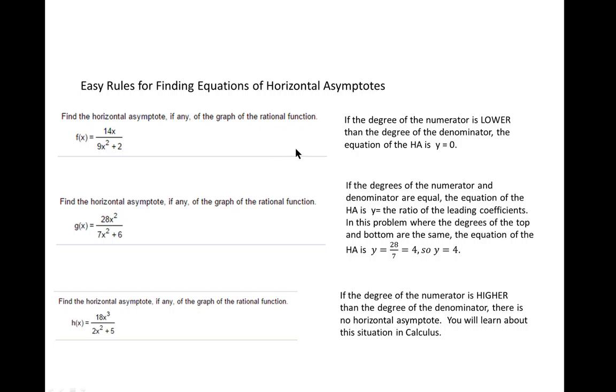If the degree of the numerator is lower than the degree of the denominator, here the degree of the numerator is 1, the degree of the denominator is 2, so the degree of the numerator is lower. When this happens, the equation is always y equals 0, which is the x-axis. The x-axis will be your horizontal asymptote.